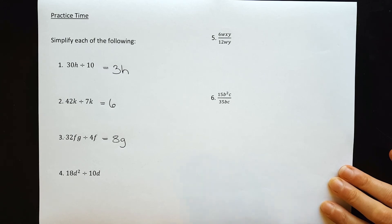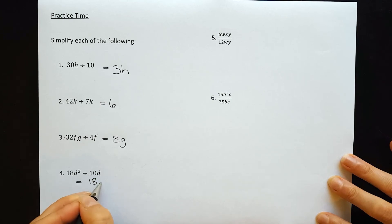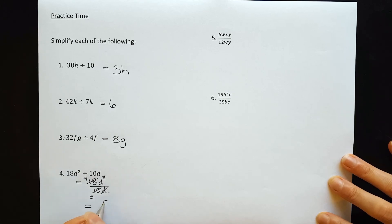Question 4: 18d squared divided by 10d. 18 divided by 10 doesn't work, so write it as a fraction: 18d squared over 10d. Then look for things to simplify. 18 and 10 can be divided by 2 to give 9 on top and 5 on bottom. We can cancel one d with the squared, leaving one more d on top. The final answer is 9d over 5.